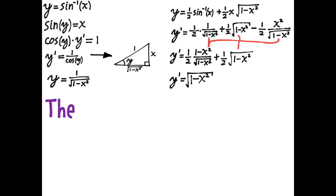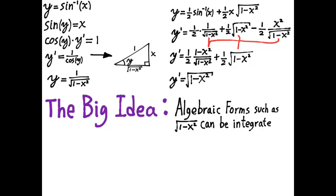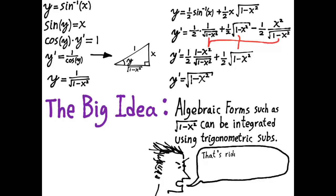The idea of trigonometric substitution is that you start with a certain type of algebraic form and actually turn it into a trigonometric integral, even though the original integral had nothing to do with trigonometry. And that makes it easier to integrate. I don't blame you if you feel skeptical, because it's hard to understand why you would take an integral that's just an algebraic expression and seem to make it more difficult by turning it into a trigonometric integral. But this really works.